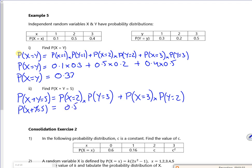So x is 2 and 0.5, y is 3 and 0.5. X is 3 and 0.4, y is 2 and 0.2.